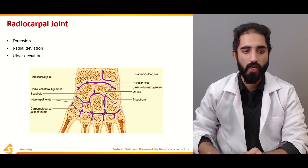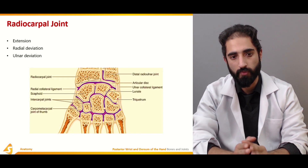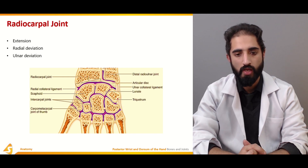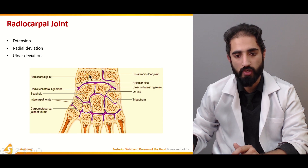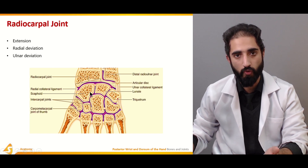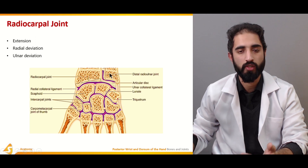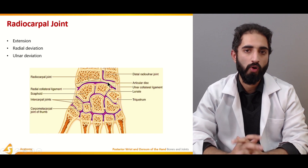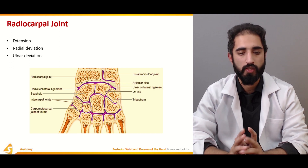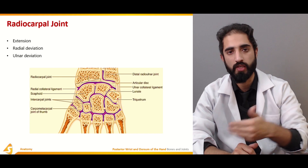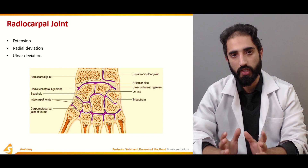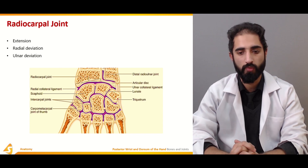At the radiocarpal joint, movements possible include flexion, extension, radial deviation, and ulnar deviation. There is direct communication of the radius with the first row of carpal bones, but no direct communication of the ulna with the proximal carpal bones — it is blocked by the articular disc. The components are therefore the proximal carpal row, the articular disc, and the radius, with no contribution by the ulna.